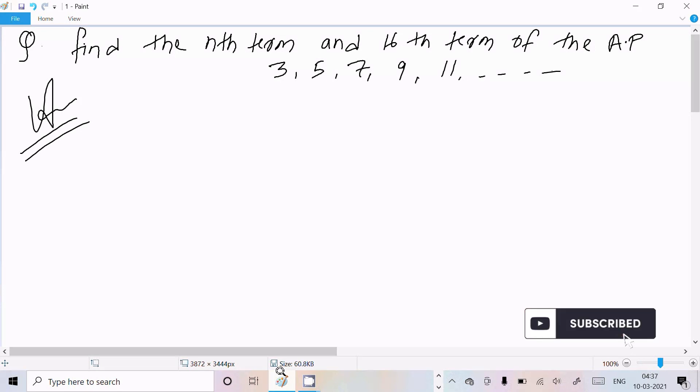So let's see the answer. First I am going to calculate the nth term. So here the formula is Tn equal to a plus n minus 1 into d, where a is the first term.